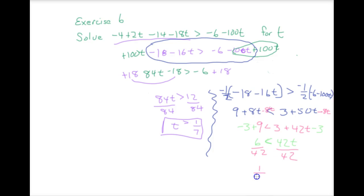And we get 1 over 7 is less than t. That is the same thing. t is everything greater than 1 over 7. t is greater than 1 over 7. 1 over 7 is less than everything t. We did it. Yay.